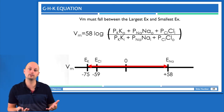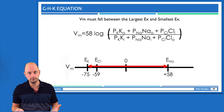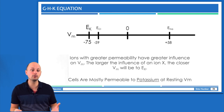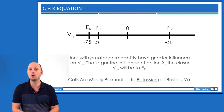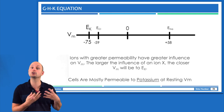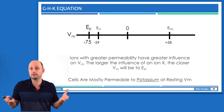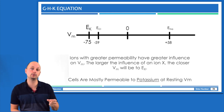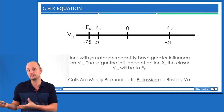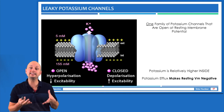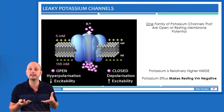In a tug of war, what determines the movement of the rope is how hard each person is pulling — stronger people are able to pull the rope closer to them, while weaker people find the rope further away. In the case of membrane potential, the strength of the pull is determined by the ion's permeability. Ions that are more permeable are able to move membrane potential closer to their equilibrium potential, while ions with low permeability don't have much influence. A typical neuron has a resting potential around minus 70 millivolts, which is incredibly close to potassium's equilibrium potential of minus 75 millivolts — because potassium has the highest relative permeability at rest, due to a family of channels known as leaky potassium channels that are open at rest.